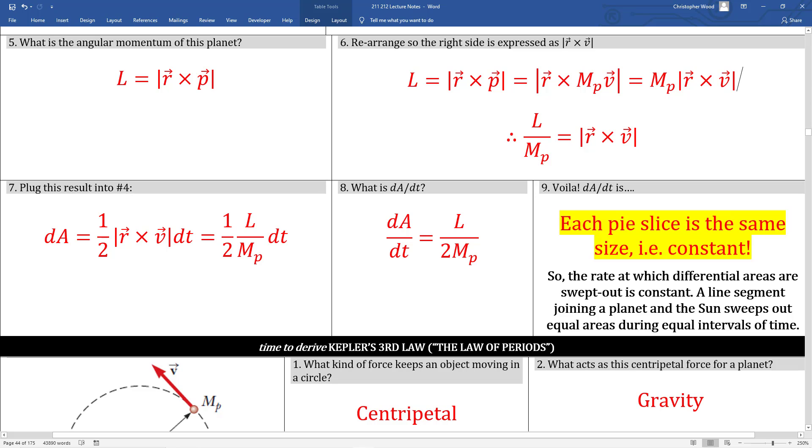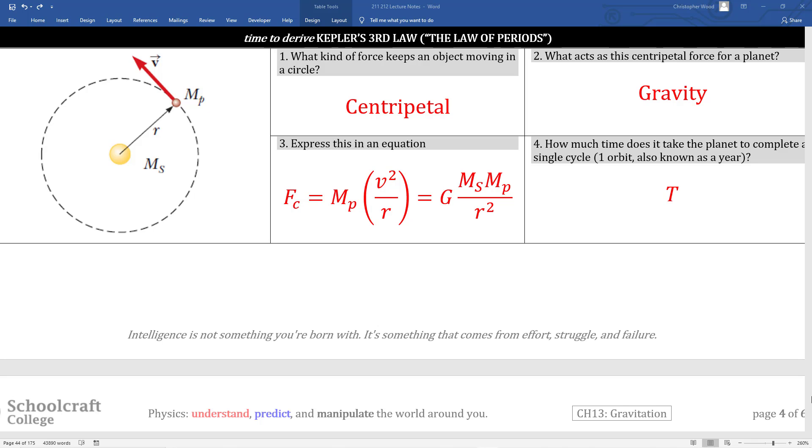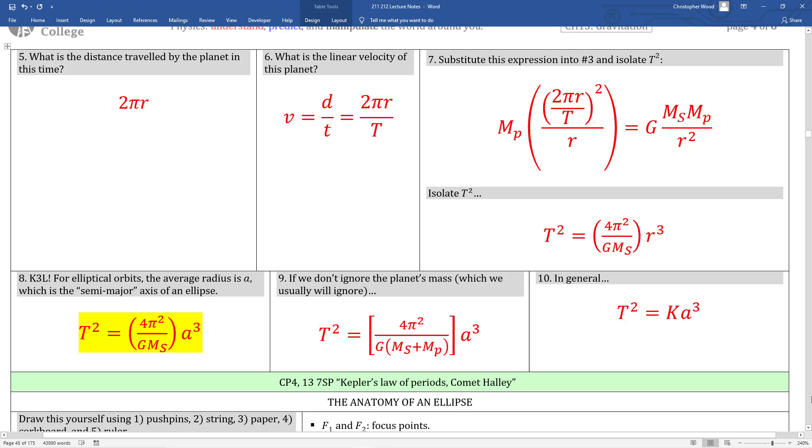Time to derive Kepler's third law, also known as the Law of Periods. This law basically says if you know the distance between a satellite and its central object, say for example the distance between the Earth and the sun, you can figure out how long it takes that satellite to orbit its central object. Conversely, if you measure how long it takes a satellite to orbit its central object, you can figure out the distance between that satellite and its central object. Going through this derivation will really enforce Newton's law of universal gravitation as well as centripetal force concepts. Box number eight shows Kepler's third law.